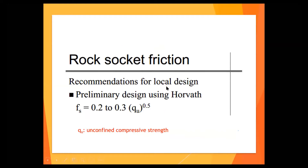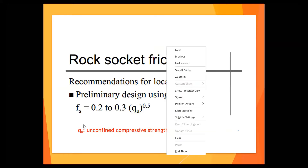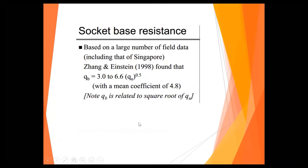Rock socketed friction is usually 0.2 to 0.3 times the square root of the unconfined compressive strength. For base resistance, we use 3 to 6.6 with a mean of 4.8. You do not need to memorize these numbers because later on — remember, this is just a preliminary design. We will probably need to do the pile test to establish the mobilized end bearing and friction. It's just a preliminary guide, a start-off point for you to use.